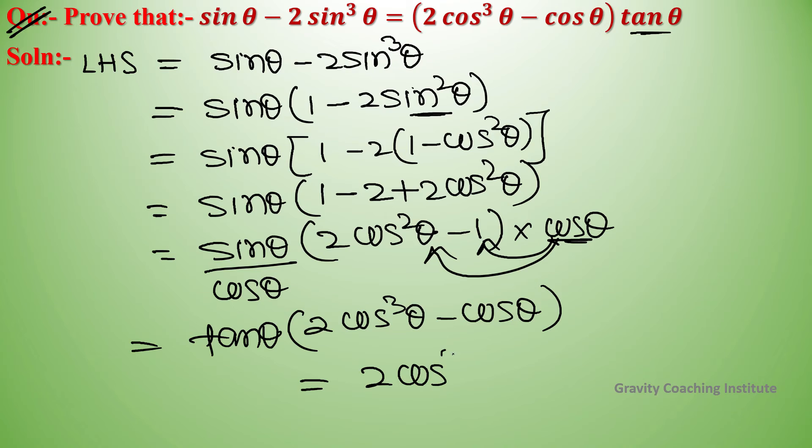So we get 2 cos cube theta minus cos theta tan theta, which equals RHS. Hence proved.